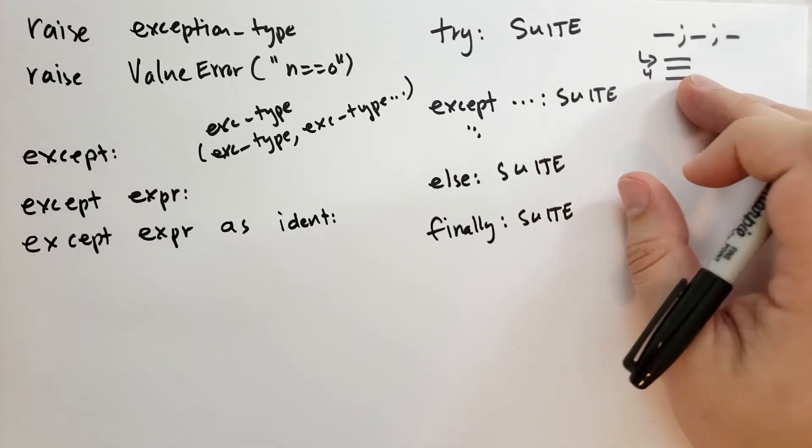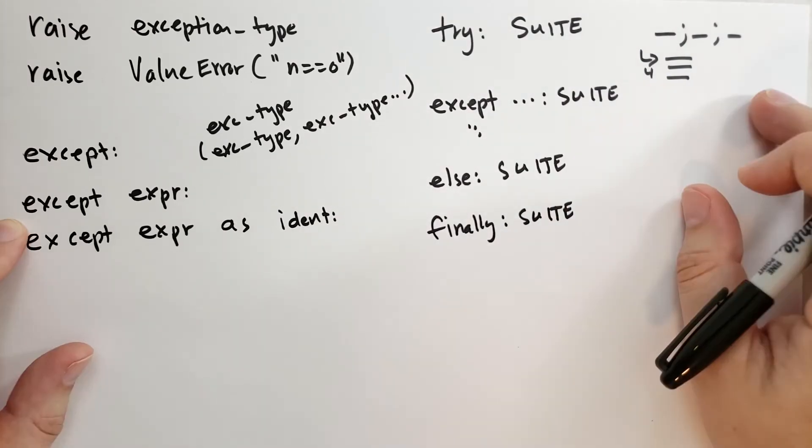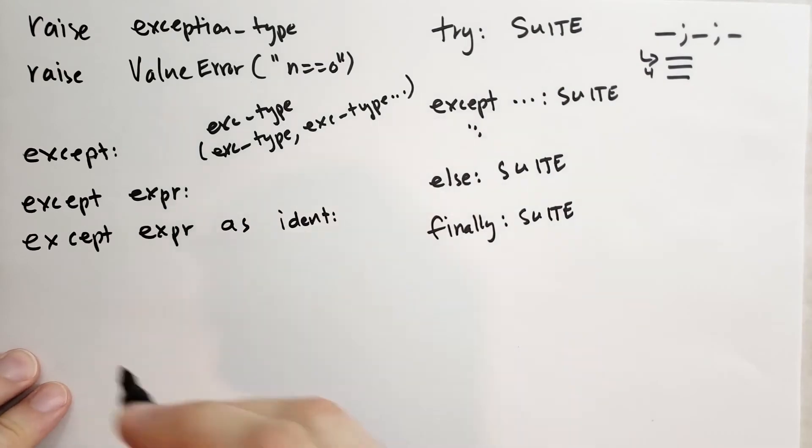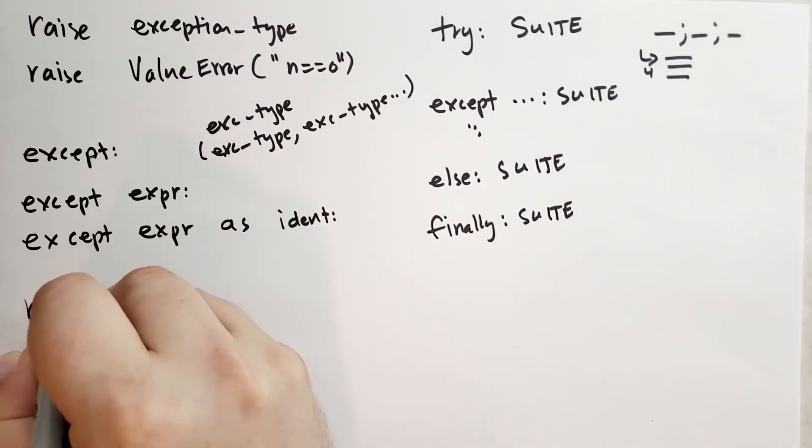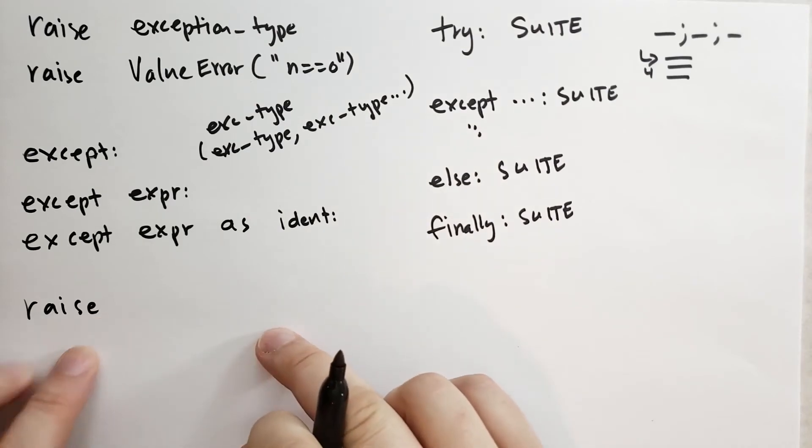As a rule of thumb, don't catch exceptions unless you intend to handle them. If you happen to catch an exception, but it's one that you don't intend to do anything with, you can re-raise that exception with the statement raise. Note that there's no exception type and no expression here. This will re-raise the exception from an except block.